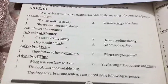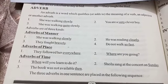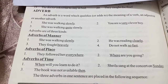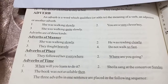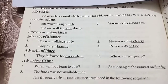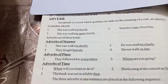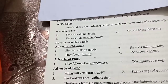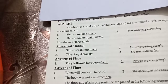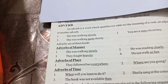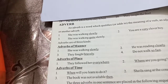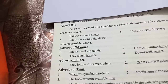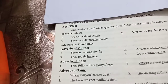Some other types of adverbs include adverb of frequency, adverb of degree, and adverb of affirmation or negation. Adverb of frequency answers the question 'how often.' For example, 'Dawood is always late' — how often is he late? Always. So 'always' is an adverb of frequency.